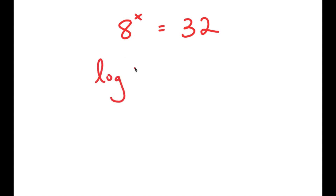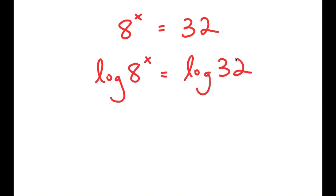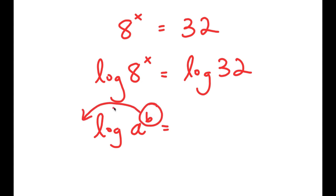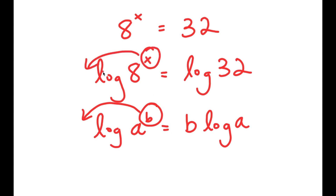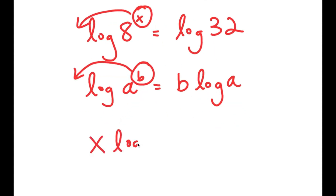So I get log of 8 to the power of x is equal to log 32. Now if I have something in the form log of a to the power of b, I can move b to the front of the logarithm — so this becomes b times log a. In the case of log 8 to the power of x, we can think of x as b, so we move x to the front. I get x times log of 8 is equal to log of 32.